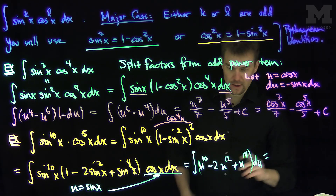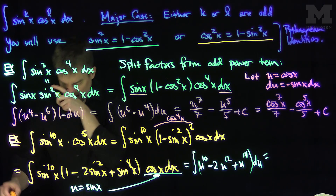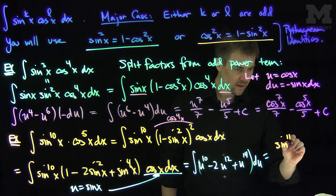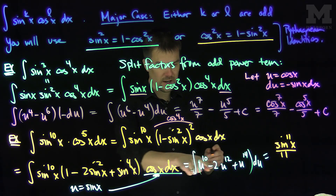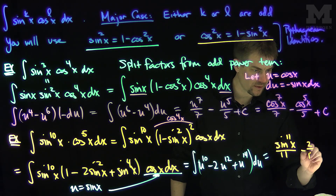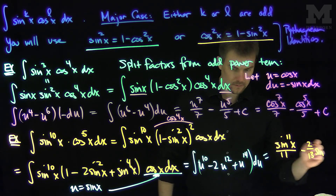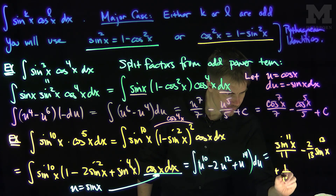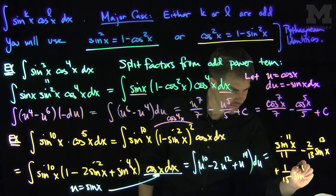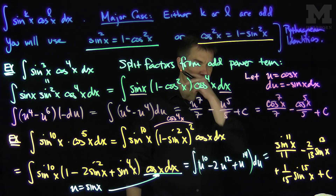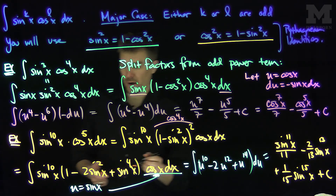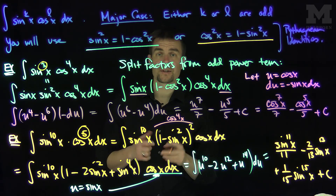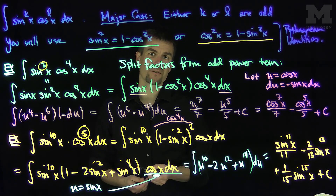Integrating term by term, we get sine to the eleventh of x over eleven, minus two over thirteen times sine to the thirteenth of x, plus one over fifteen times sine to the fifteenth of x, plus a constant C — and there's your antiderivative. So in either case, as long as one power of sine or cosine is odd, we can use one of the Pythagorean identities. In the case where both are odd, the exact same approach works. Thank you very much.